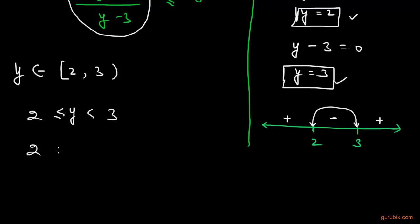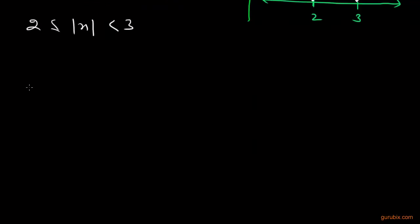Or we can say that |x| is greater than or equals to 2 but less than 3. In this condition, we shall apply a formula: if |x| is greater than a but less than b, then it will be if and only if x belongs to (-b, -a) union (a, b).